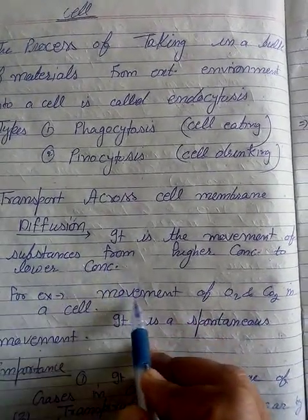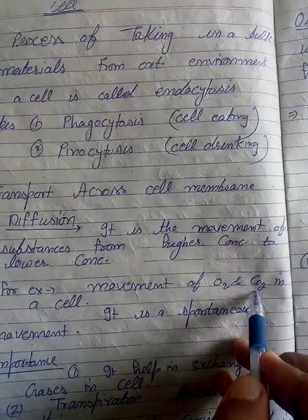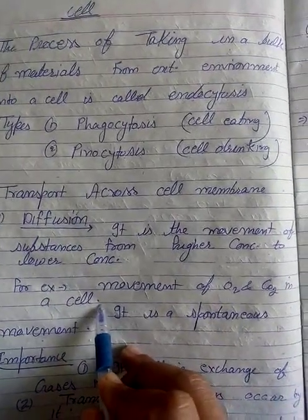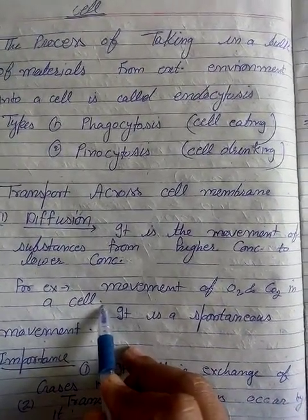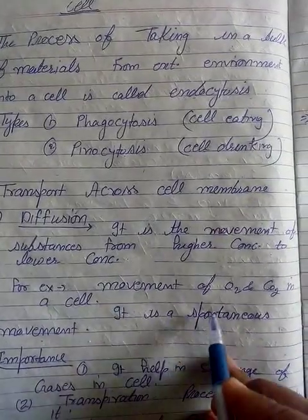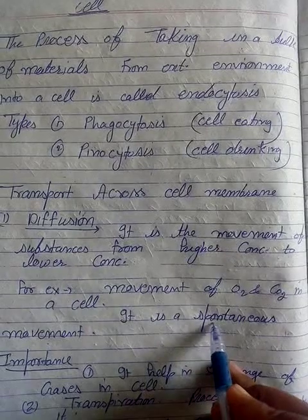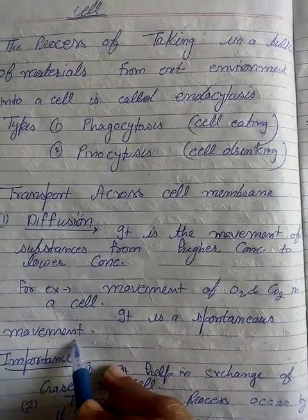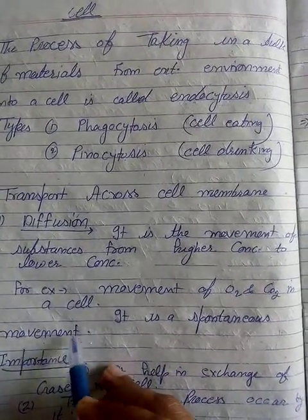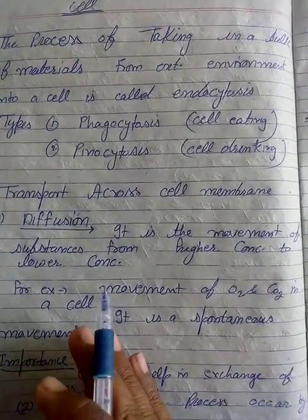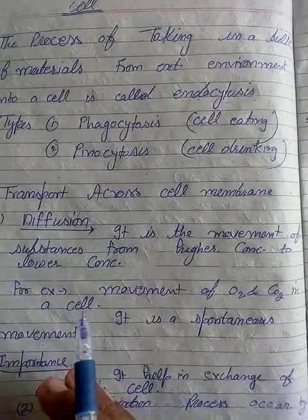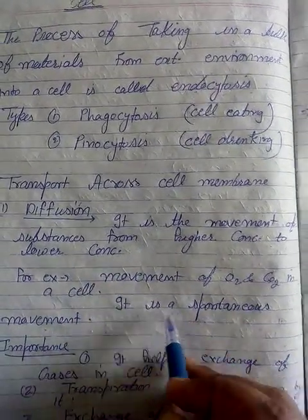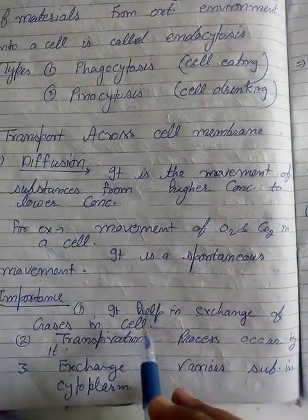For example, oxygen and carbon dioxide movement in a cell — that is called diffusion. Diffusion is a spontaneous process or spontaneous movement. Means jahan par concentration higher hogi, vahaan se lower ki taraf jana — that is called diffusion.